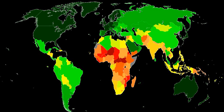The Human Development Index is a composite statistic of life expectancy, education, and income per capita indicators. A country scores higher HDI when the life expectancy at birth is longer, the education period is longer, and the income per capita is higher. It is used to distinguish whether the country is a developed, a developing, or an underdeveloped country. The index was developed in 1990 by Pakistani economist Mahbub ul-Haq and Indian economist Amartya Sen.